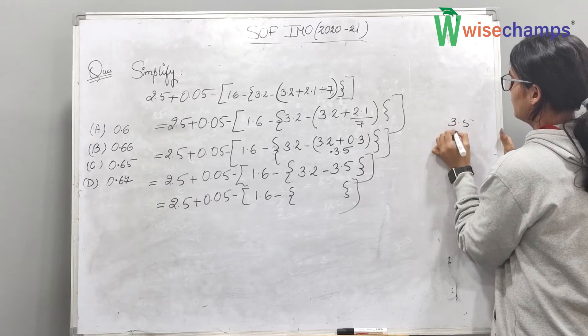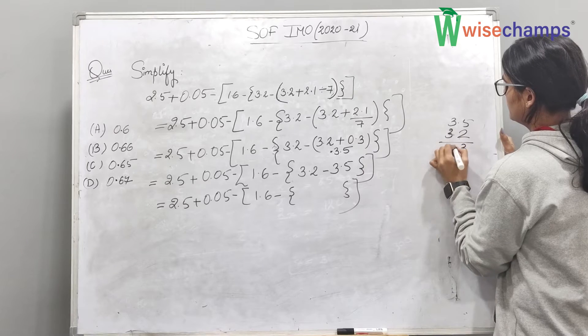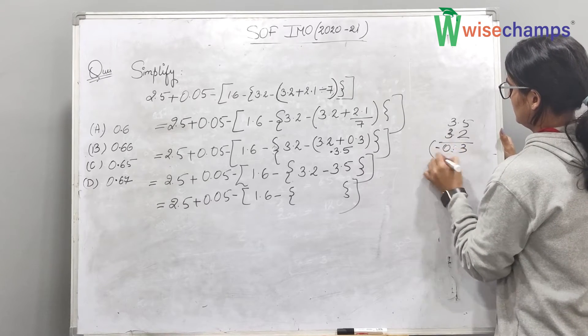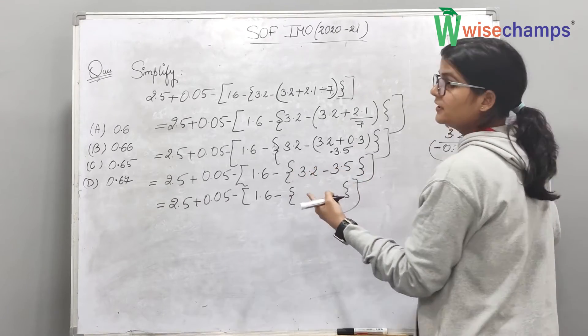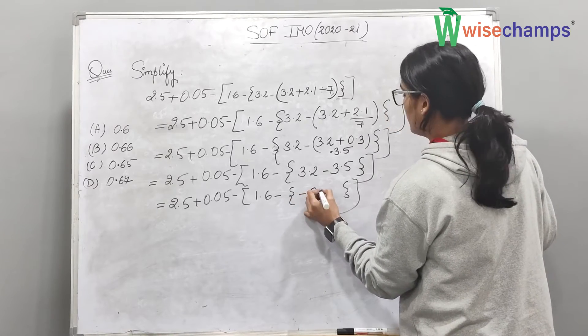Let's do 3.2 minus 3.5, which will give us negative 0.3. And we use minus because the value 3.5 is greater than 3.2. So, we will use minus 0.3.